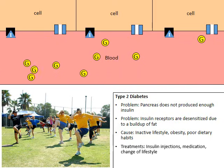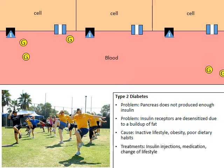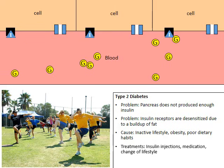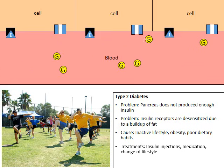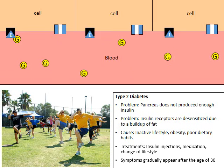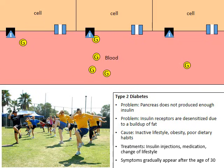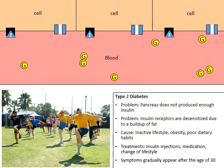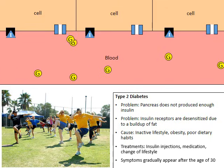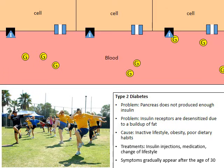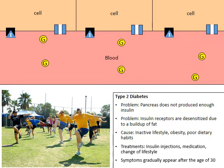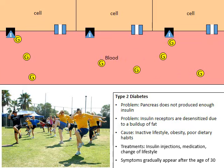Now that the glucose channels are open, the high concentration of glucose in the blood can diffuse into the cells, bringing the blood sugar back down to a normal level. Type 2 diabetes is often called a late onset disorder because symptoms gradually appear later in life — typically after the age of 30. Keep in mind there are warning signs prior to age 30, since this is typically caused by poor lifestyle choices involving inactivity, obesity, and poor diet.